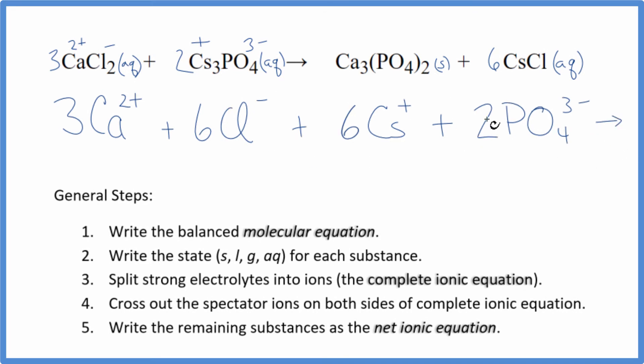So these are the reactants in our net ionic equation. Now for the products, we don't split solids apart in net ionic equations. So that's just calcium phosphate. Then we have the cesium and the chloride ions, so six cesium ions, and then six of those chloride ions.